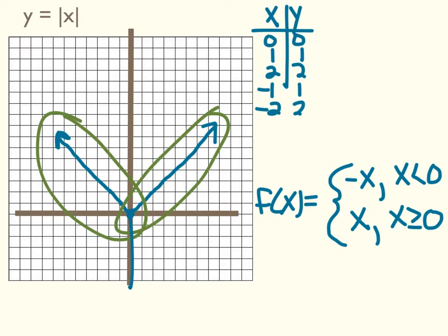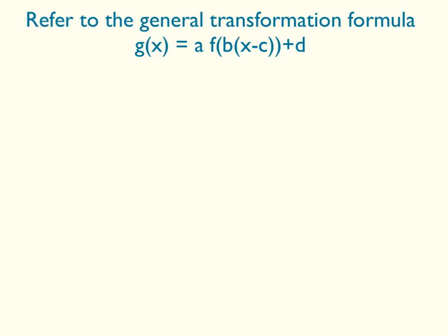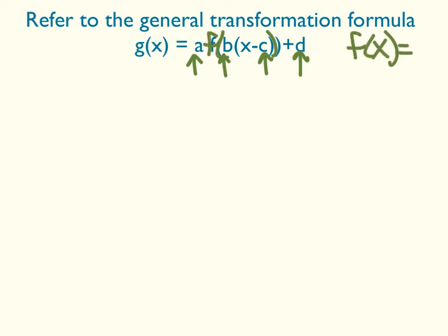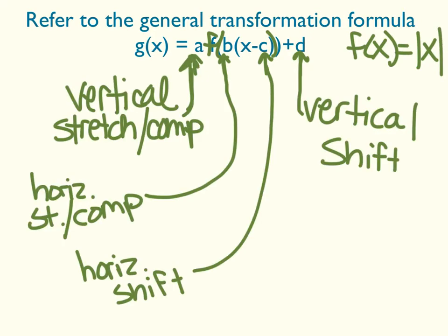Now let's practice some graphing. When we do, we're going to refer to our general transformation formula. Remember, the a is your vertical stretch or compression, the b is your horizontal stretch or compression, c is your horizontal shift, and d is your vertical shift. The f of x, in this case, is our parent function, the absolute value of x. Write these down if you don't remember them.